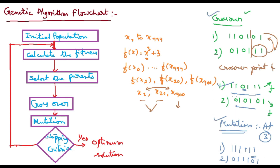This is called crossover and mutation. Crossover means at a certain point we divide parent 1 and give the other part to parent 2, and take the same other part from parent 2 for parent 1. We will discuss all these things once we have seen the problems. This is simply the flowchart of the genetic algorithm. After that, we will see one problem so that everything will be clear. Thank you so much.